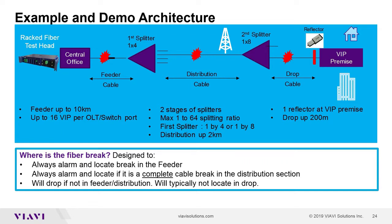This is a typical PON architecture and the system is designed to accommodate it. The system is designed to always alarm and locate a break in the feeder cable, since everybody downstream is affected when the feeder has a break. It can also alarm and locate a complete break in the distribution section — it must be a single cable going to one place. We only locate complete breaks to avoid false alarms.